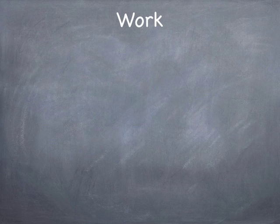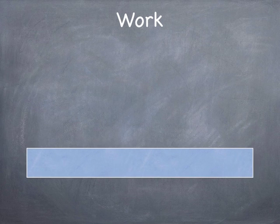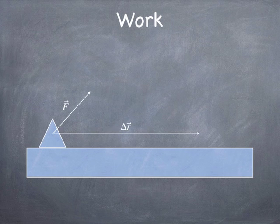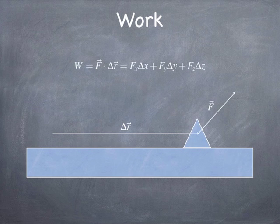Now, how do we compute work? Work is something you calculate based on force and motion. If you have a force that acts while a particle is displaced by a displacement delta r, the work is simply the dot product of the force vector and the displacement vector. The dot product multiplies two vectors together by taking the products of the corresponding components and adding them: the x-component of F times the x-component of displacement, plus the y-component of F times the y-component, plus the z-component of F times the z-component.